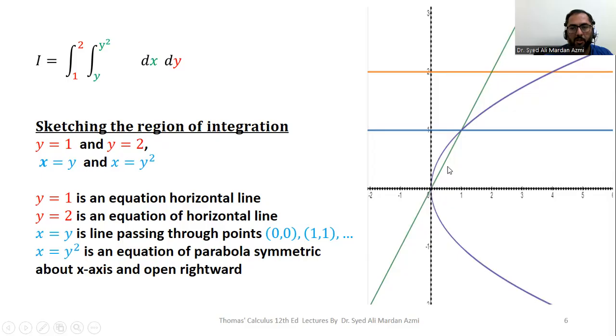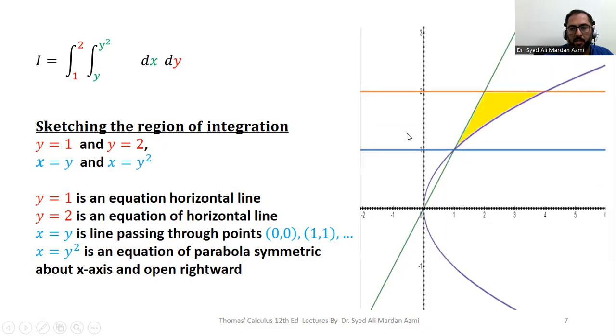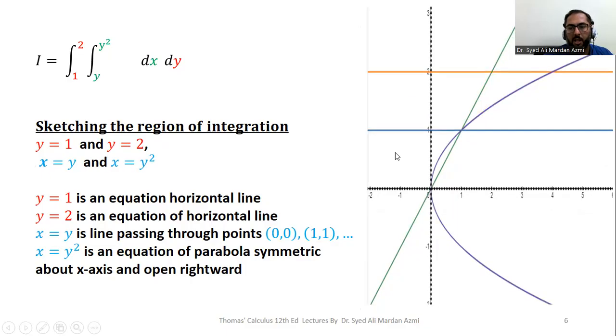First, this blue color horizontal line is for y equal to 1. This orange color horizontal line is for y equal to 2. This green color line is for x equal to y. And this purple color curve is the parabola which is x equal to y squared. Now, you have noticed one more thing that in the last step, I have made the x-axis and y-axis as dotted. And this is the reason that x-axis and y-axis are not included in our region.